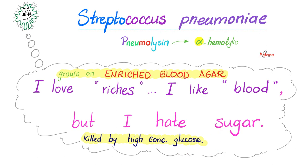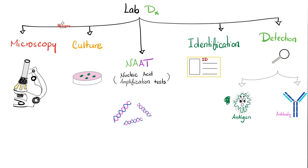Because I am a glucose fermenter, I will convert it into lactic acid. Too much lactic acid is going to kill me. That's why high sugar is a preservative, so to speak.